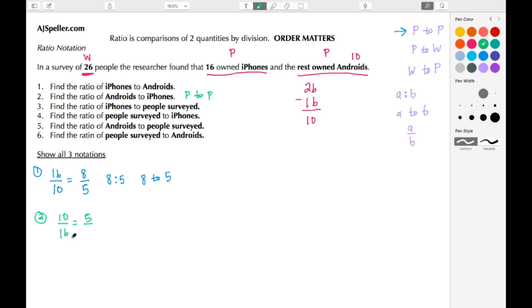So this can be rewritten as 5 colon 8 and also 5 to 8. Moving on to number 3, we want to find the ratio of iPhones to people surveyed.